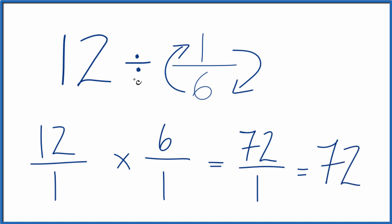So in answer to our question, 12 divided by 1/6, that equals 72. And if you took 72 and multiplied it by 1/6, you'd get 12.